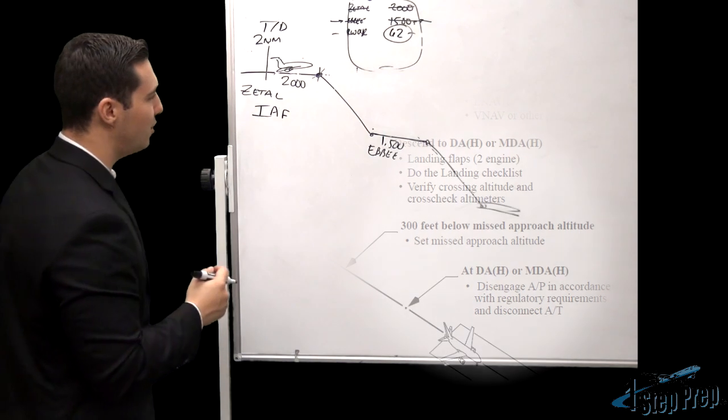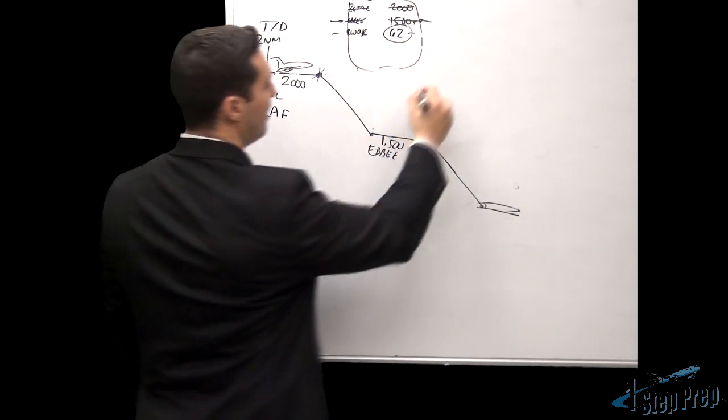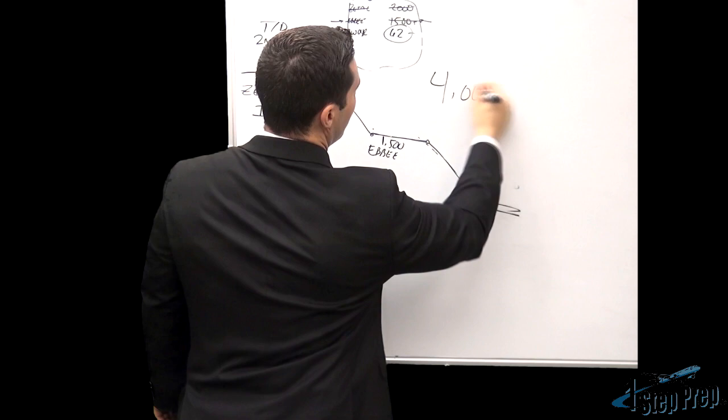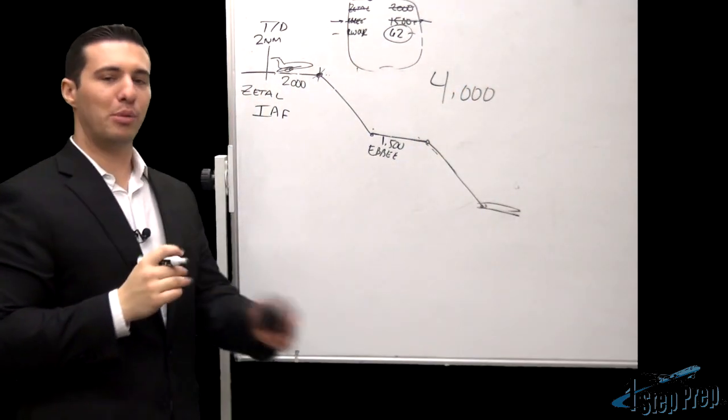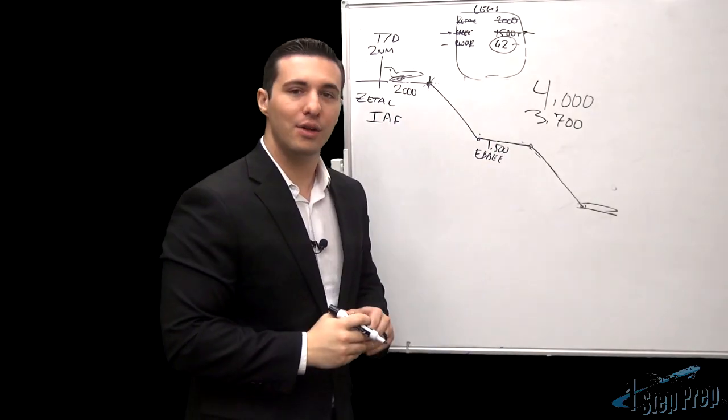Let's say your missed approach altitude happens to be 4,000 feet, which happens to be the case here in Kennedy runway 4 right. 4,000 foot missed approach altitude, 300 feet below that, 3,700 feet.